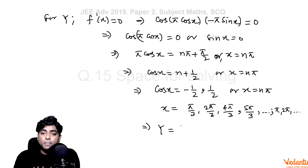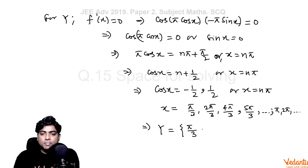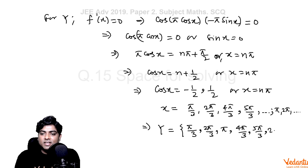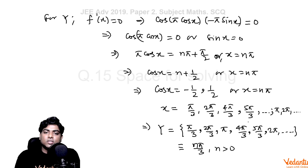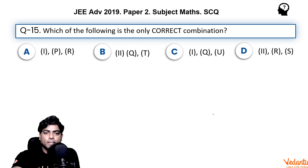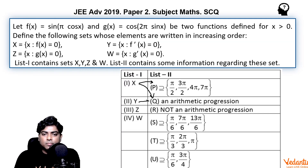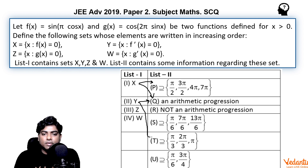Combining all values, set Y forms an arithmetic progression: π/3, 2π/3, π, 4π/3, 5π/3, 2π, ... which is nπ/3 for n > 0. So entry 2 (Y) matches with Q and T. Entry 1 (X) goes with P and Q, and entry 2 (Y) goes with Q and T.